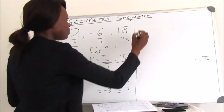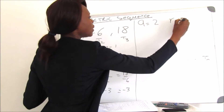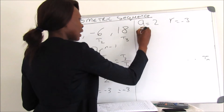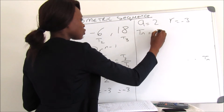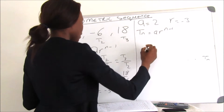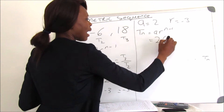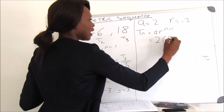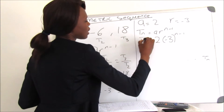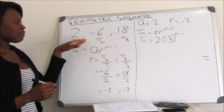We substitute A equals 2 and R equals negative 3 into the standard equation Tn equals AR to the exponent of n minus 1. So it is 2 multiplied by negative 3 to the exponent of n minus 1. This is our equation for the sequence.